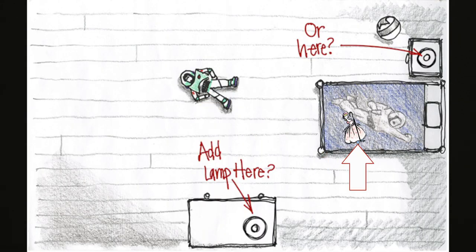We can see that Buzz and Bo Peep are laid out on the floor and on the bed in a haphazard sort of way. We can also see in this sketch that there's a question: Where do we want to put the lamp?